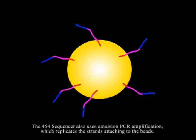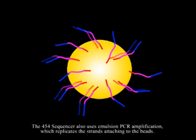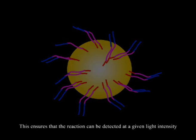The 454 sequencer also uses emulsion PCR amplification, which replicates the strands attaching to the beads. This ensures that the reaction can be detected at a given light intensity.